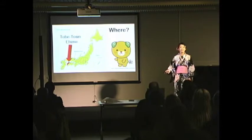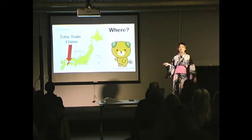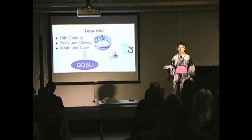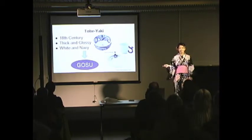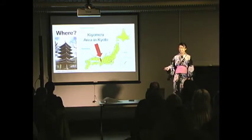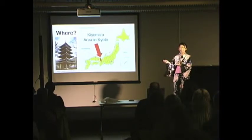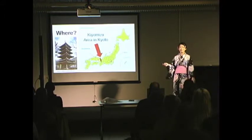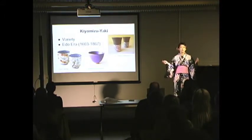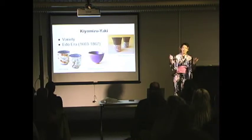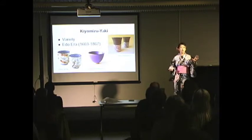Next is tobe yaki. It is made in Tobe Town, Ehime prefecture. It was started in the 18th century, and it has a thick, glossy, white and navy blue design. This paint is called gosu. Finally, kiyomizu yaki. Are you familiar with Kyoto? Kyoto is one of the ancient cities in Japan, and kiyomizu yaki is made in the kiyomizu area, Kyoto prefecture. Long years ago, Kyoto was the capital of Japan, so many people from different areas came to Kyoto and brought their culture. So kiyomizu yaki has features of various cultures.